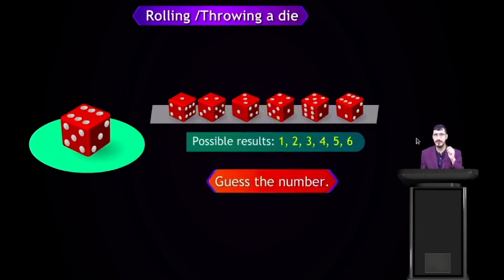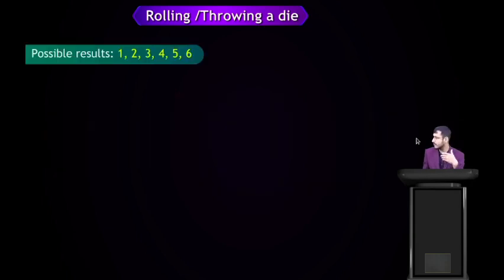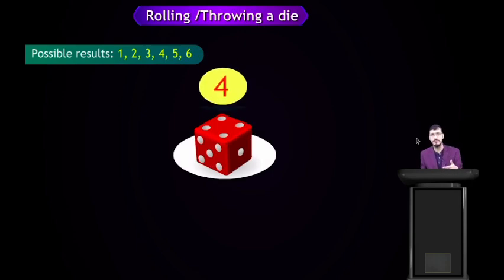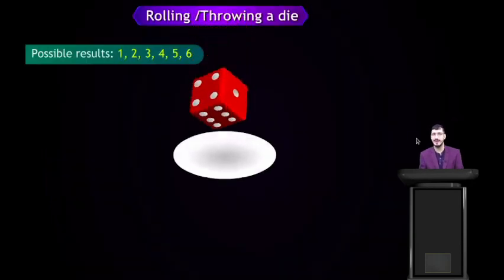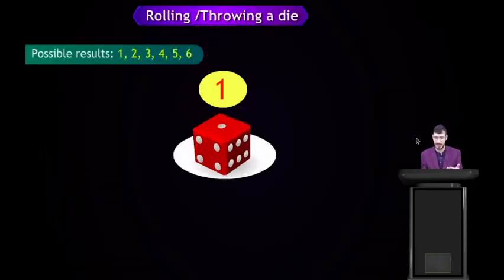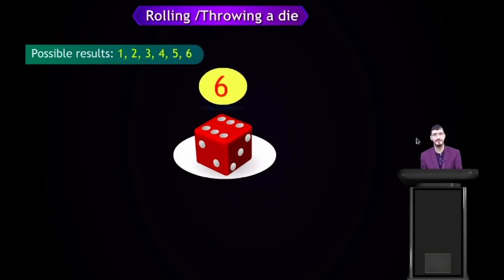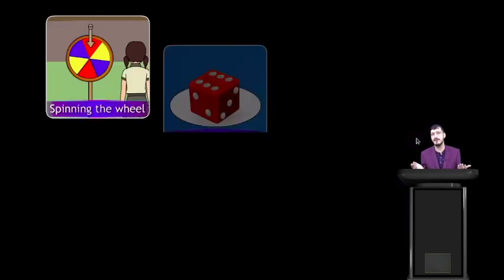Now can you guess the number? Possible results are 1, 2, 3, 4, 5, 6. When we throw the first time, the outcome is 4; throwing again, the outcome is 1; and then the outcome is 6. So we cannot predict the outcomes.